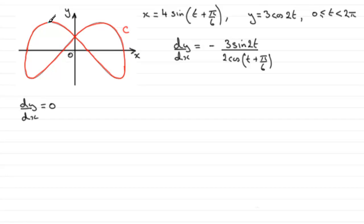And there's going to be four of them. As you can see, the gradient is zero at this point, this point, this point, and this point. So we expect four solutions.